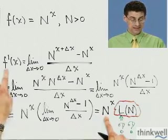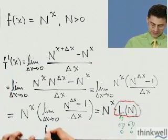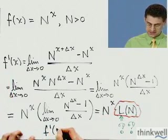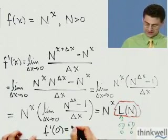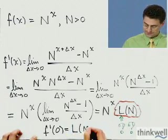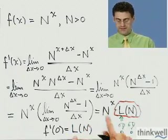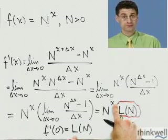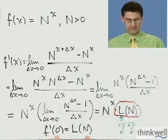So what I would see is that f prime at zero would equal that mysterious number, because the N to the zero would just drop out.